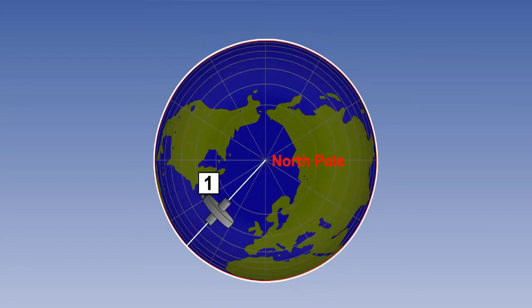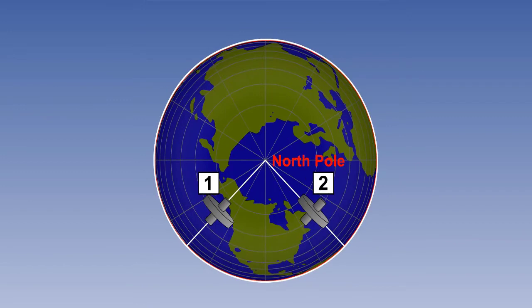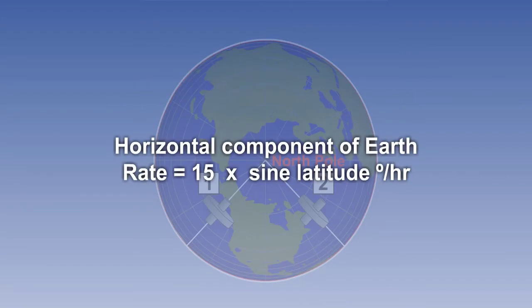However, in this picture we are looking down on the north pole. The gyro and the meridian are in line. As the earth rotates, the meridian changes its direction with respect to space, but the gyro does not. This gives us an equation for the horizontal component of earth rate which we have met before: it is 15 times the sine of the latitude in degrees per hour.